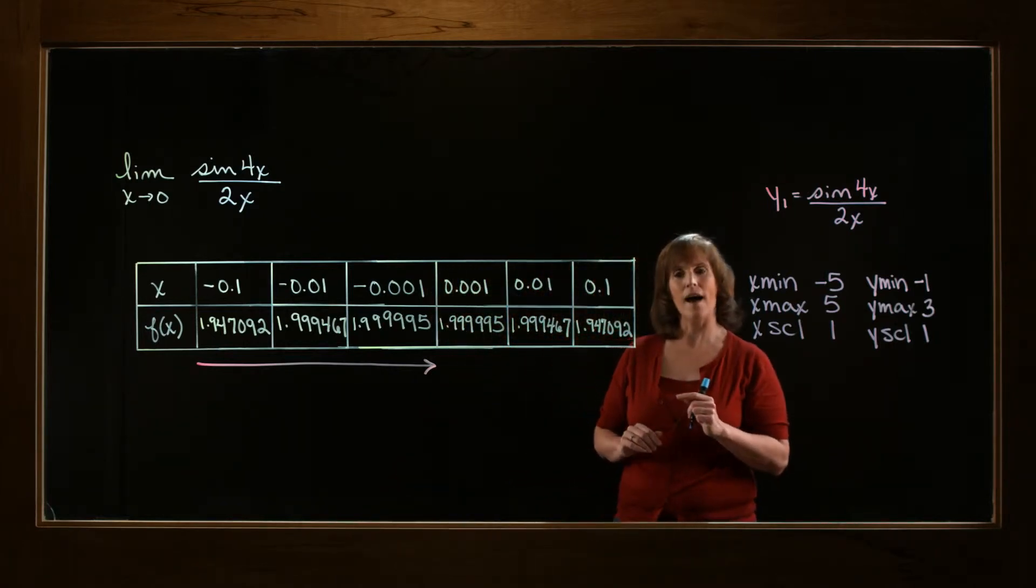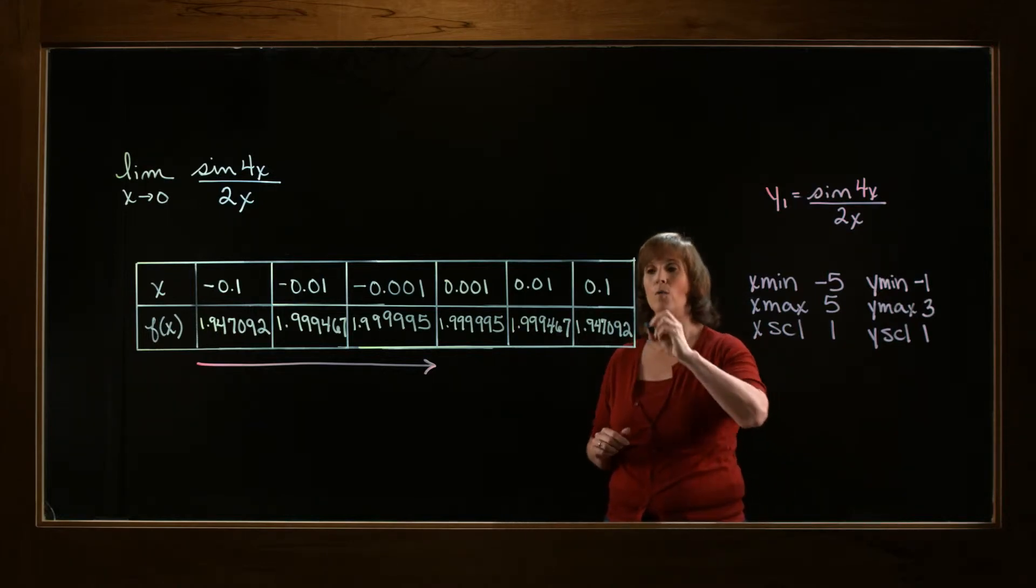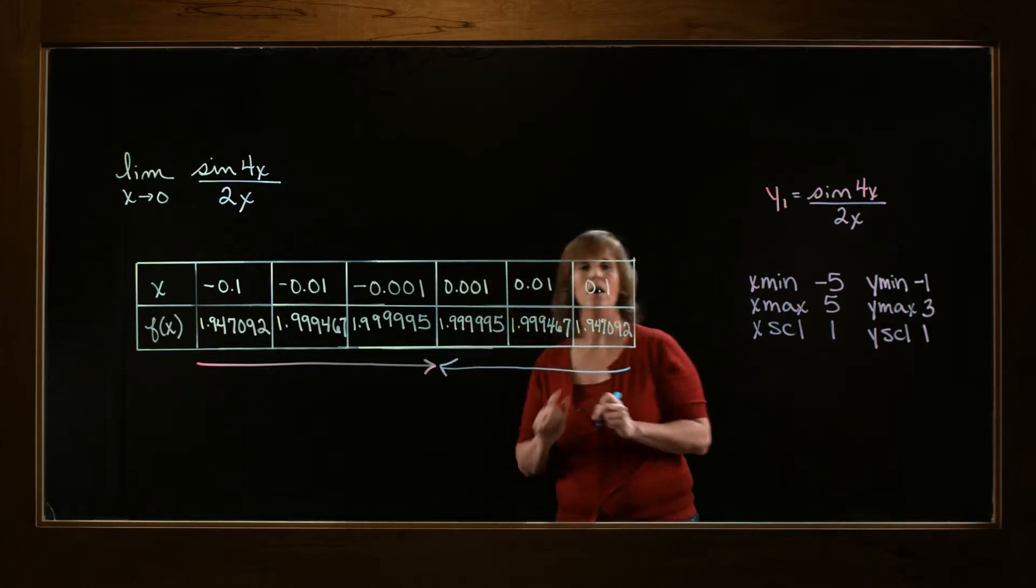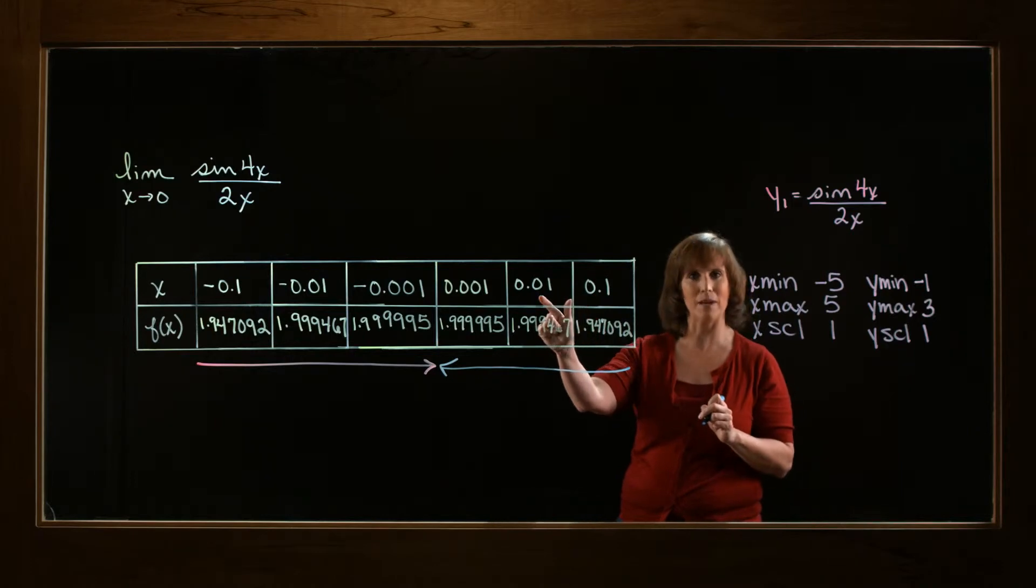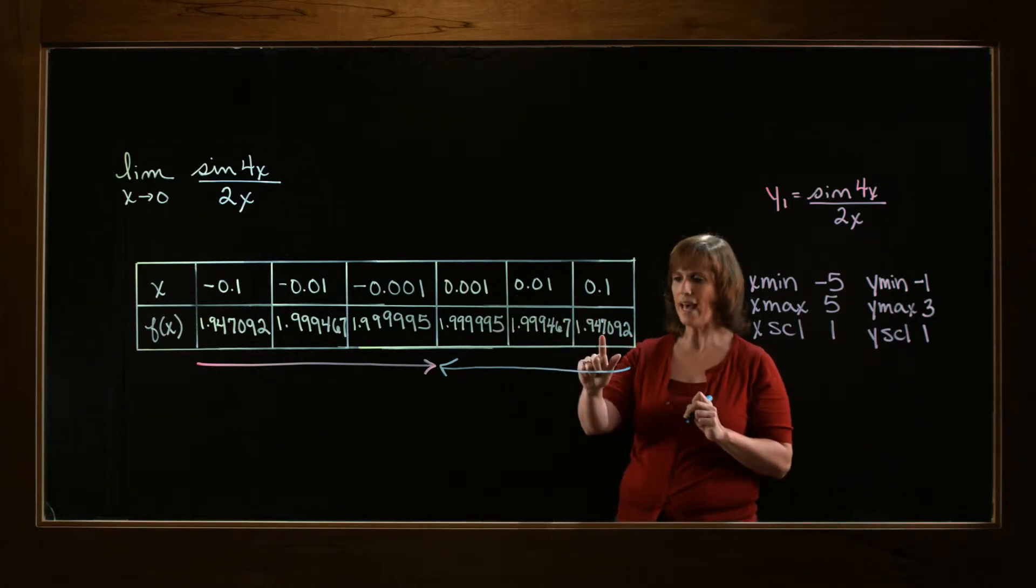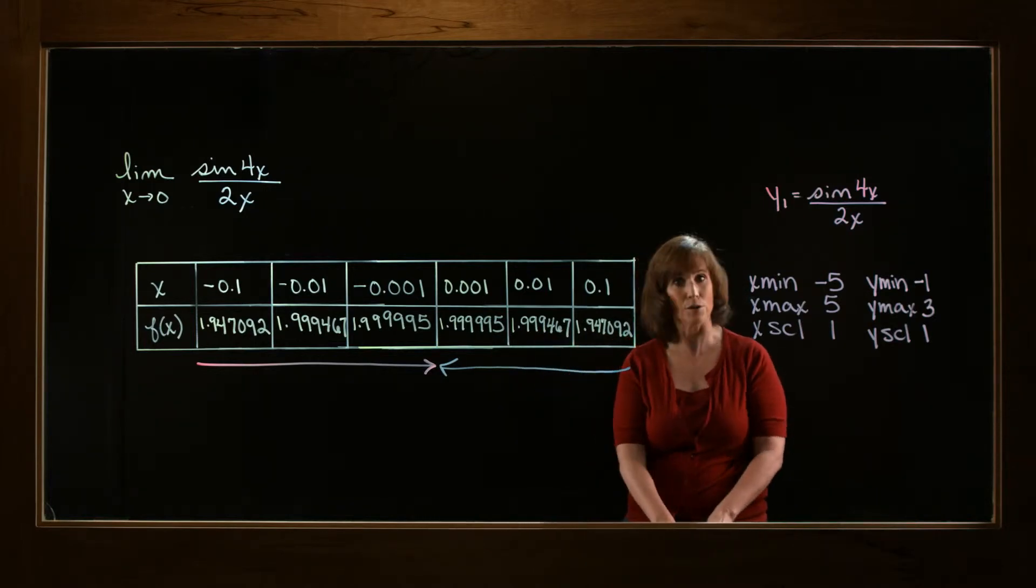All right. Now let's try approaching 0 from the right-hand side. So I'm going to take some values bigger than 0, but get closer and closer to 0. Which means I'm going to be looking at the table in this direction. What happens at 0.1? And then I'm going to get closer at 0.01, and closer yet at 0.001. Well, again, if I look at these numbers, it looks like they're getting closer and closer to the value 2.